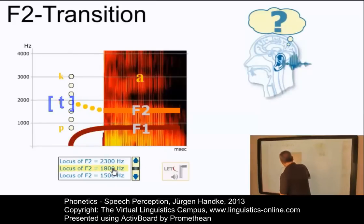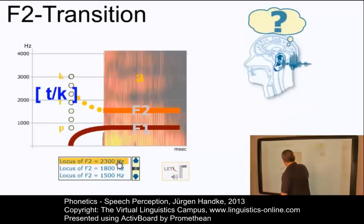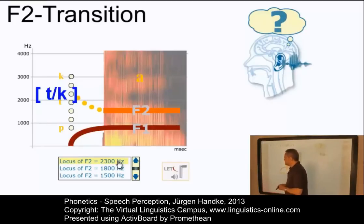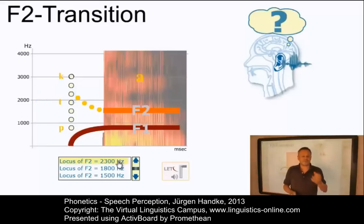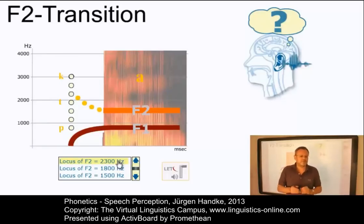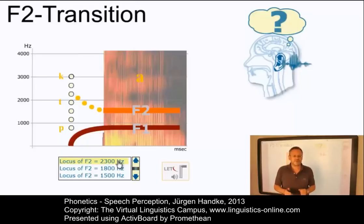But what about intermediate values? If the locus is higher than that for T but lower than that for K, we cannot identify the respective consonant. Thus, it seems that speech perception is sensitive to the locus of F2, and that the transition of F2 from the locus to the vowel is an important cue in the perception of speech.